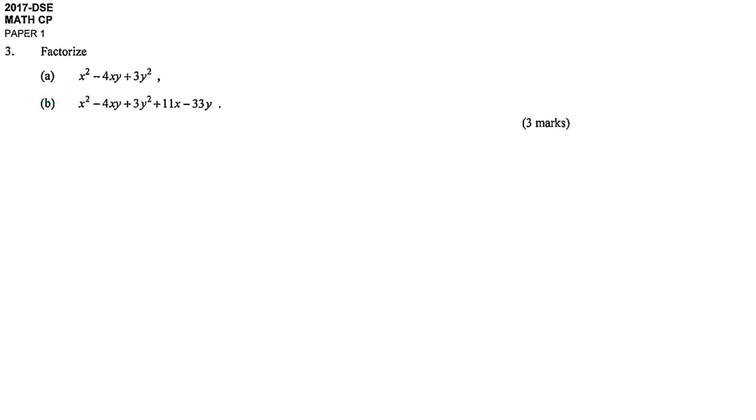We have to factorize this expression: x squared minus 4xy plus 3y squared. x is a squared term, however, 3 is not a squared term. And we don't find any common factor, so we can't use common factor, we can't use identity. We have to use the last method.